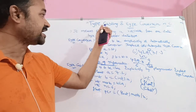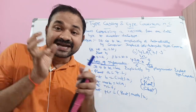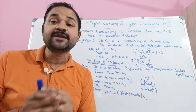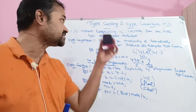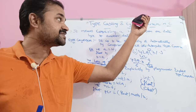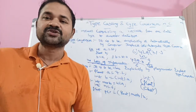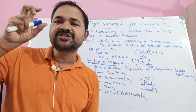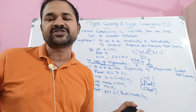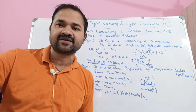So this is about typecasting and type conversion. Converting a variable from one data type to another explicitly done by the programmer is typecasting. Type conversion is done automatically by the compiler — we do not need to do anything. Typecasting means we perform it as a programmer or user. Implicit type conversion is done by the compiler.